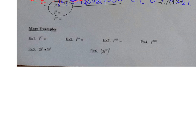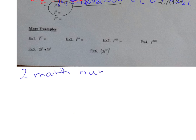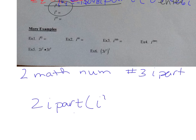Now how do we handle an expression like 2i squared times 3i cubed? You can't plug this whole thing in at one time — you have to do each piece separately. Do 2, then iPart of i squared, and you get negative 2. Then multiply by 3i cubed — iPart gives negative 3i. So negative 2 times negative 3i is positive 6i.